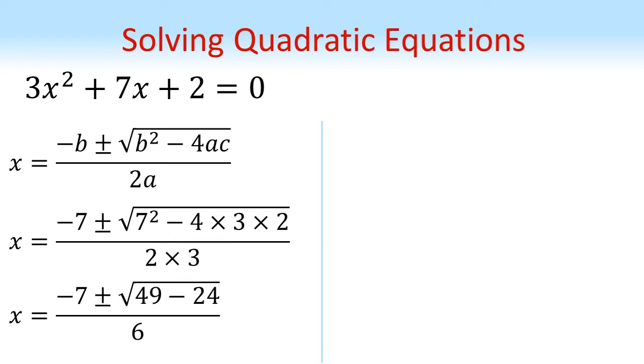So our numbers underneath the square root become 49 minus 24, which is 25. Square rooting the 25 gives us 5. So x is equal to minus 7 plus or minus 5, all over 6.